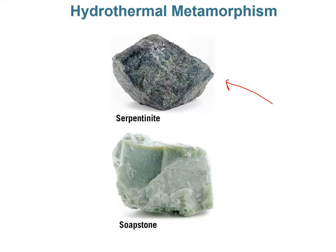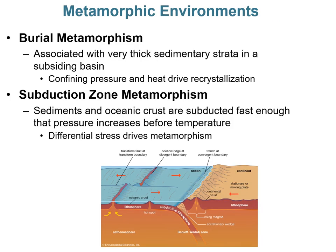Examples of hydrothermally metamorphosed rocks include serpentinite — essentially ocean crust or basalt that has been metamorphosed — often with quartz veins running through it — and soapstone. Burial metamorphism occurs where many sedimentary rocks pile up in a subsiding basin; confining pressure and a little heat drive recrystallization. In subduction zones, the subducting plate moving against the overriding plate creates drastically increased pressure, so much of the metamorphism in subduction zones is driven by high differential stress.